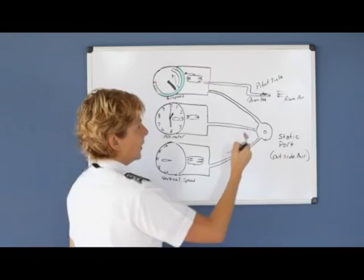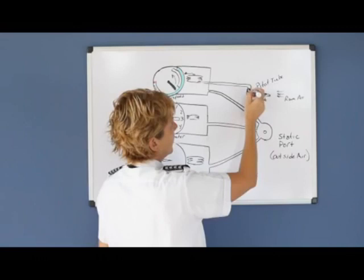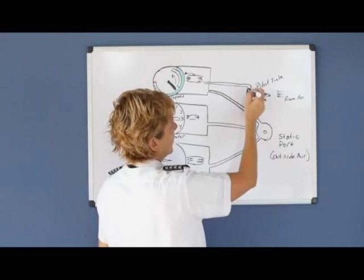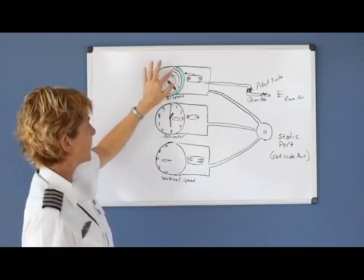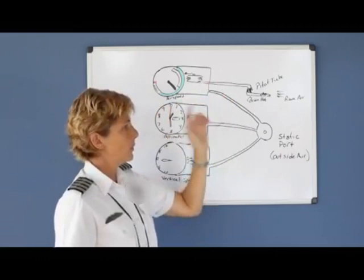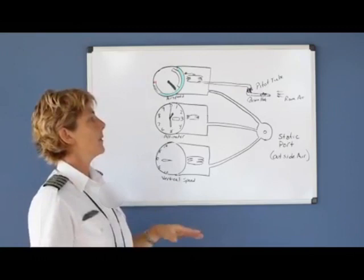But what would happen if another bee jammed that first bee in and blocked the drain hole also? Now, how would your instrument work? Since you have air that is now trapped into this wafer, if you increased your airspeed, your airspeed indicator would not change because there's no additional air coming in here. Or if you slow down, your airspeed wouldn't change. So faster or slower, there would be no change.